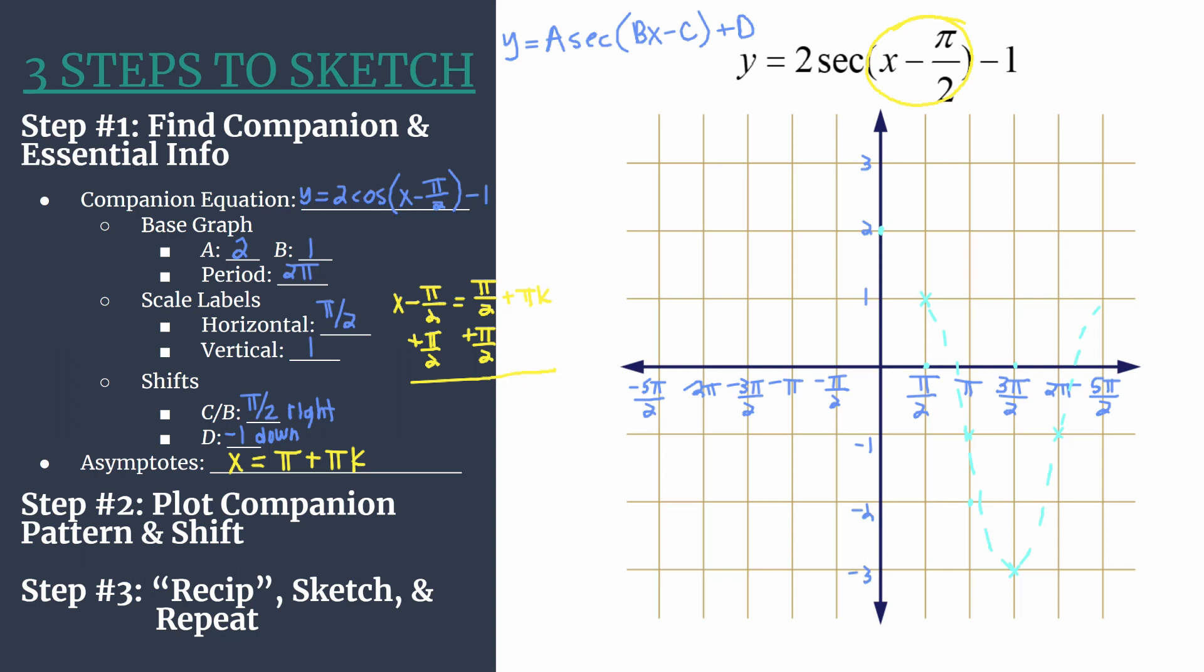But since we're actually graphing the secant graph, we're ready for step 3, where we transition our key points into the reciprocal graph, our secant graph. Then we'll sketch and repeat. So start with what was the y-intercept, that first point, and put a point there at that maximum. That's going to be part of a secant curve. It's going to be specifically called a local or relative minimum. So it'll be kind of the bottom part of that secant curve in that area.